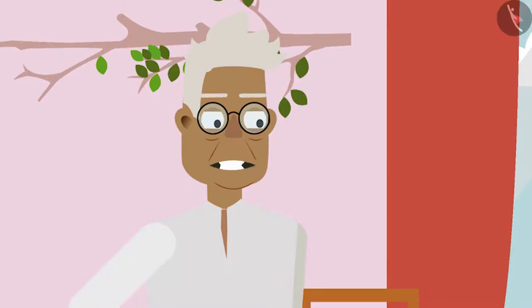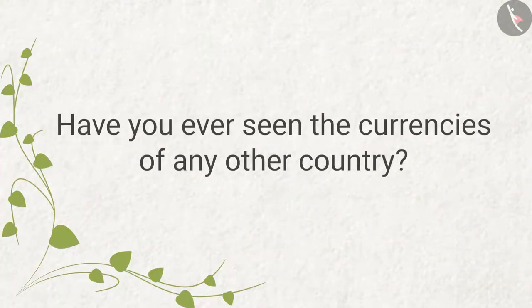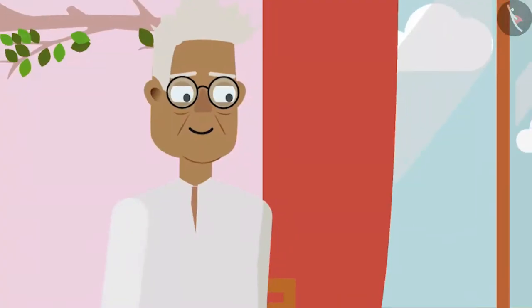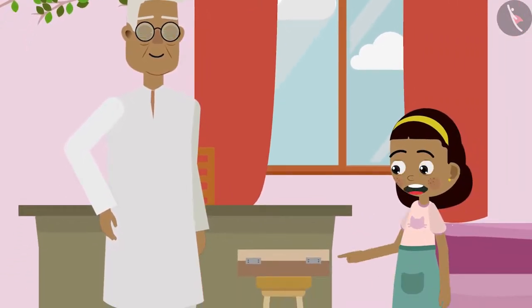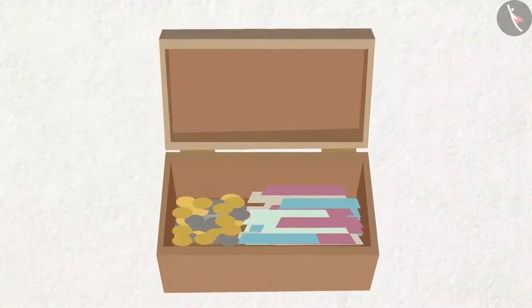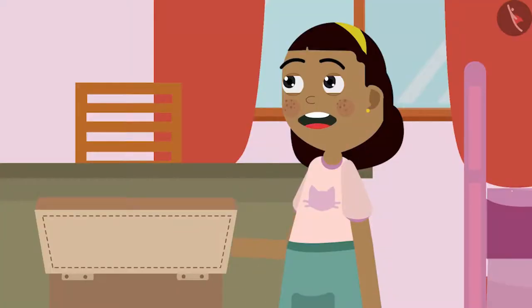Have you seen the currencies of any other country? No, grandpa, I have never seen them. Grandpa puts a box in front of Zia. What's this, grandpa? I collect currencies from different countries — all of them are in this box. Let's see them one by one. Sure, grandpa. But before that, let me draw a table so later I can see the names of the currencies of different countries.